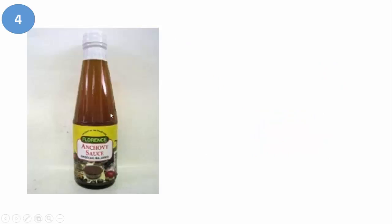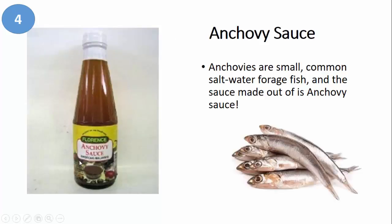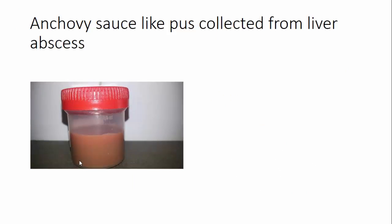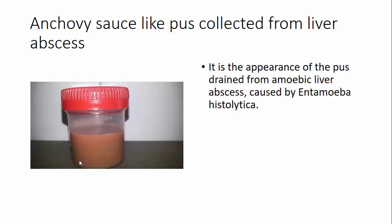The fourth one is anchovy sauce. Anchovies are small saltwater forage fish, and the sauce made from them is anchovy sauce. The pus collected from a liver abscess looks like anchovy sauce — that's how the name anchovy sauce-like pus came about. It is usually caused by Entamoeba histolytica.